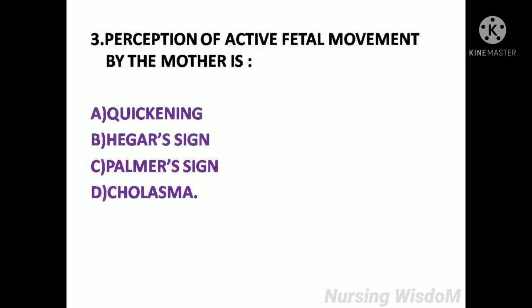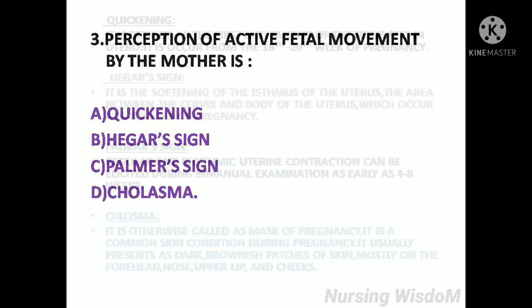Next question: Perception of active fetal movement by the mother is — Option A: Quickening. Option B: Hegar's sign. Option C: Palmer sign. Option D: Chloasma.